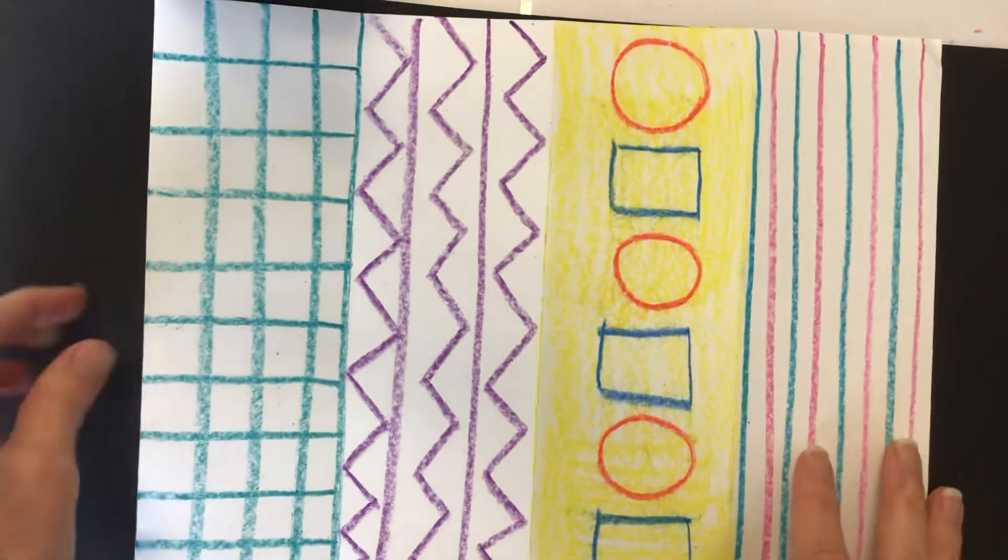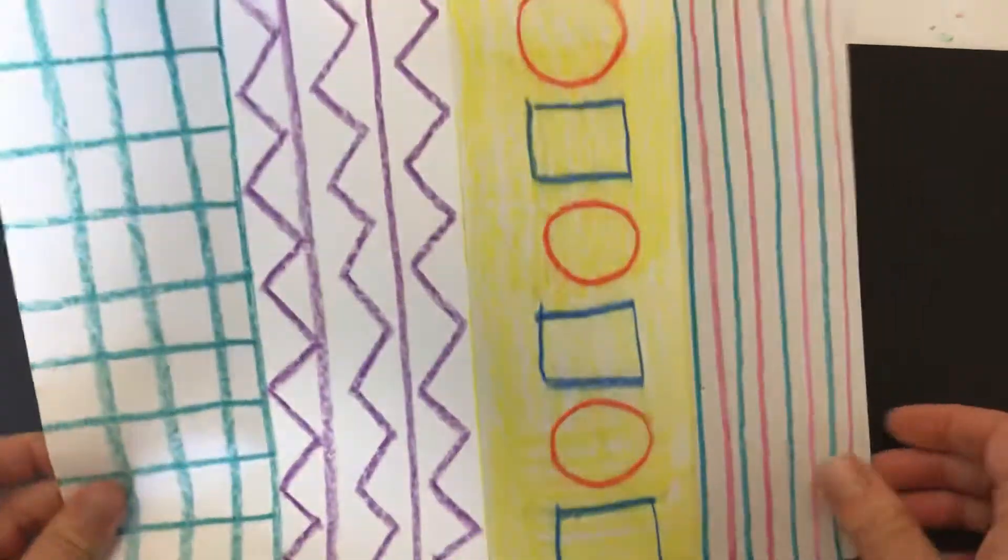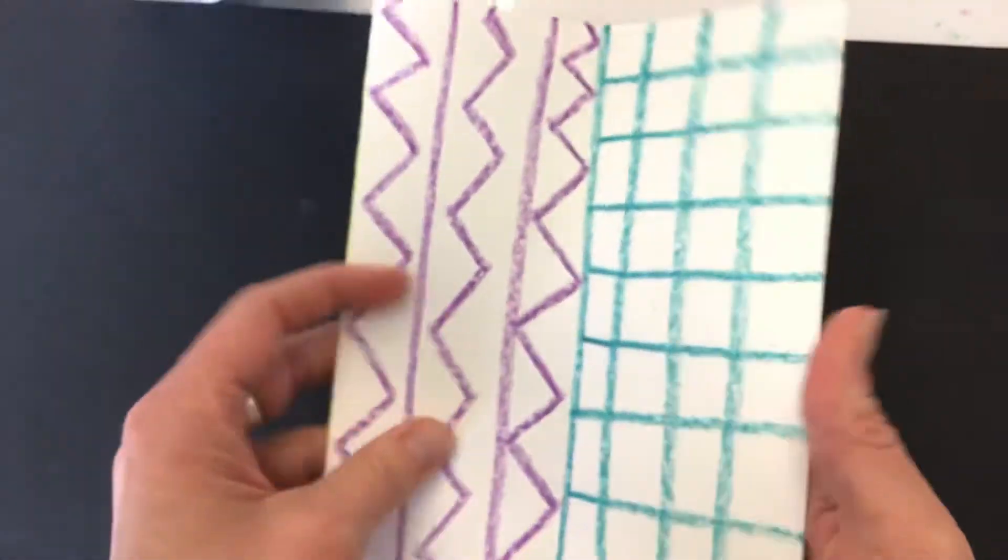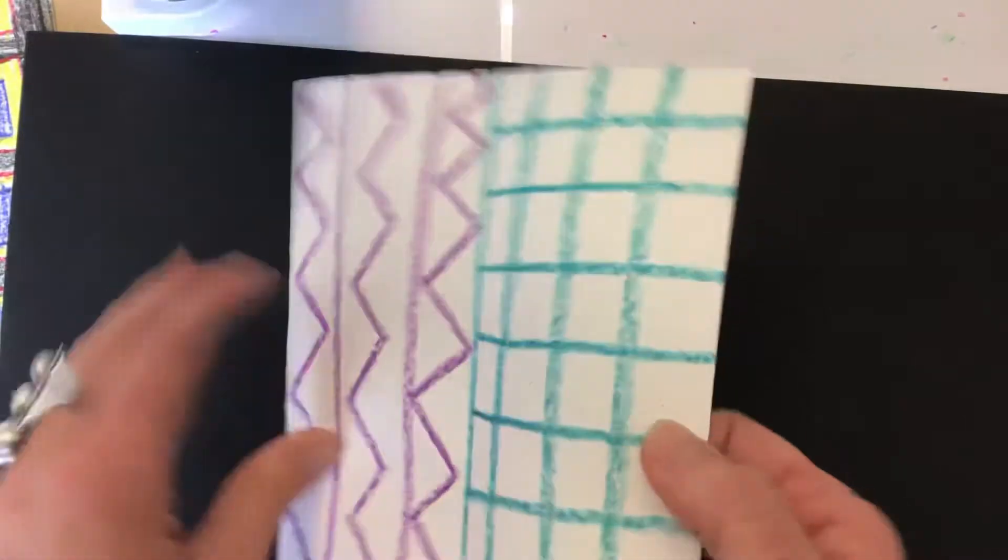Here is an example of the pattern sheet that we worked on last week. We took a regular piece of paper. You can see this is just a regular white piece of paper. We folded it in half and again, and then we made a different pattern on each section of the paper.